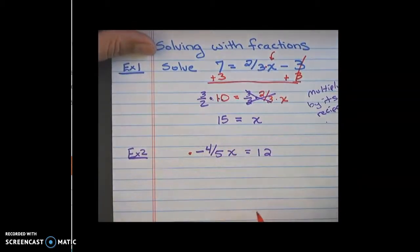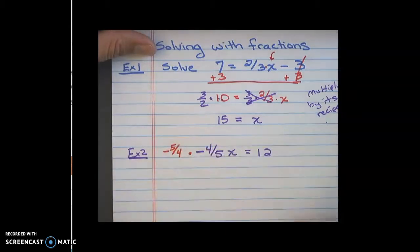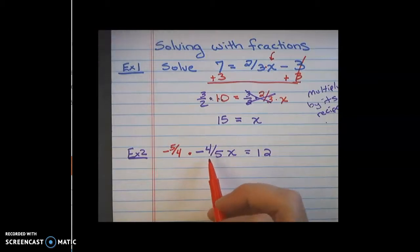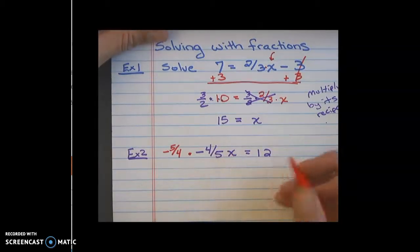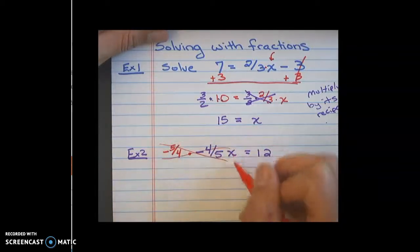Now the reciprocal of negative 4/5 is a negative 5/4. That would allow me to multiply a negative times a negative and get a positive 1, which is what I want. I just want this to be a 1x. So if I do that, these would all cancel out. It would just leave me the 1x or the x. And then I would have to multiply it on this side too.